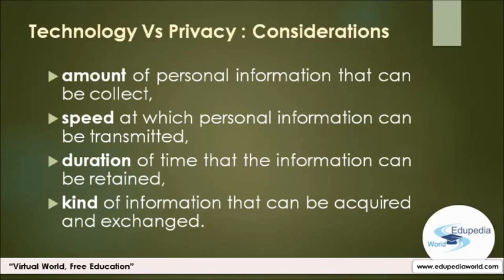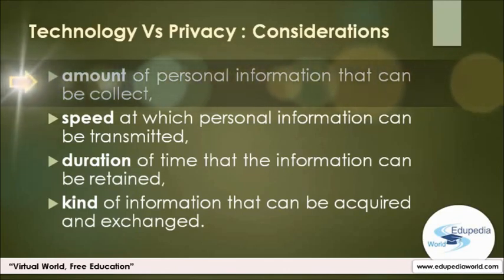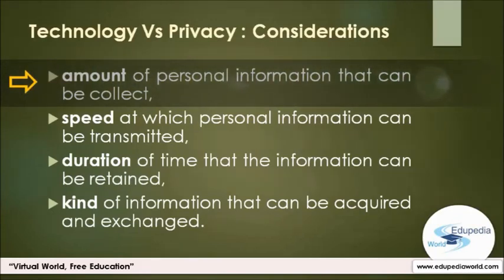Consider the impact that changes involving this technology have had on privacy with respect to: the amount of personal information that can be collected, the speed at which personal information can be transmitted, the duration of time that the information can be retained, and finally the kind of information that can be acquired and exchanged. Cyber technology makes it possible to collect and store much more information about individuals than was possible in the pre-computer era. The amount of personal information that could be collected in the pre-computer era was determined by practical considerations such as the physical space required to store the data and the time and difficulty involved in collecting it. Today, digitized information stored electronically in computer databases takes up very little storage space and can be collected with relative ease.